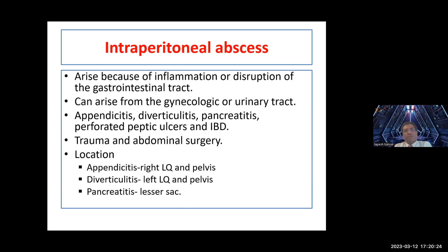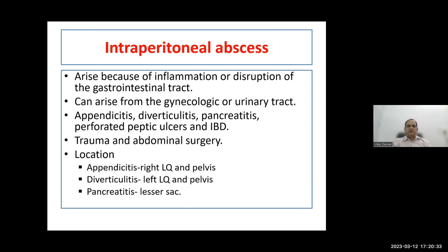Intraperitoneal abscesses arise from inflammation or disruption of the GI tract, and also from gynaecological or urinary tract pathology — secondary to appendicitis, diverticulitis, pancreatitis, perforated peptic ulcer, IBD, trauma, or abdominal surgery. Location guides likely aetiology: right lower quadrant and pelvis suggests appendicitis; left lower quadrant and pelvis suggests diverticulitis in elderly patients; lesser sac suggests pancreatitis with infected peripancreatic collection.